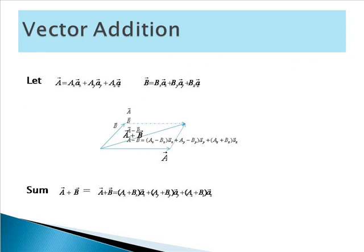Next, we are going to see vector addition — adding two vectors. Consider A⃗ = Ax·ax̂ + Ay·aŷ + Az·aẑ. Similarly, B⃗ = Bx·ax̂ + By·aŷ + Bz·aẑ, where ax̂, aŷ, and aẑ are the unit vectors. By vector addition: A⃗ + B⃗ = (Ax + Bx)·ax̂ + (Ay + By)·aŷ + (Az + Bz)·aẑ. By using the parallelogram principle, A⃗ and B⃗ get added.